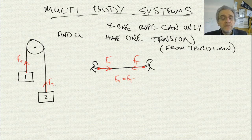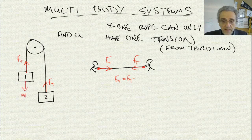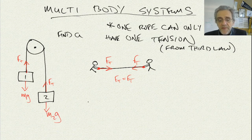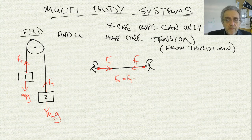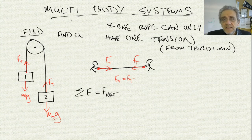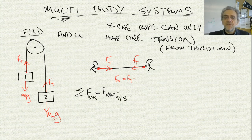Those are the only two things touching the masses, so I finish my sentence: what's touching it plus gravity, and I get M2G there. Now, in order to continue with this problem, usually what I do after drawing my free body diagram — that's step one — is I say summation of the forces equals F net. But in this case, since this is a multi-body system, I'm going to say summation of the forces on the system is the net force of the system.